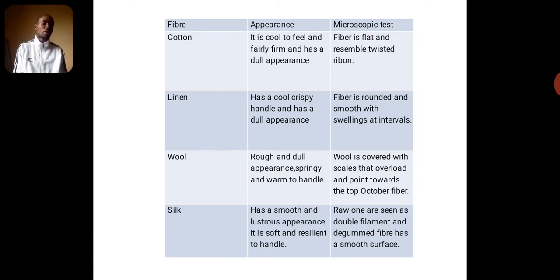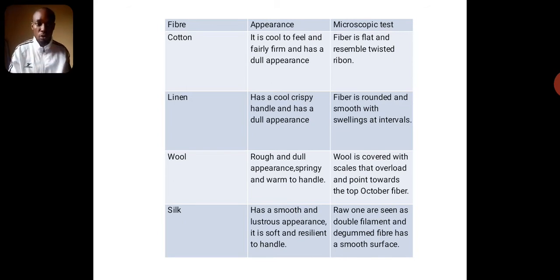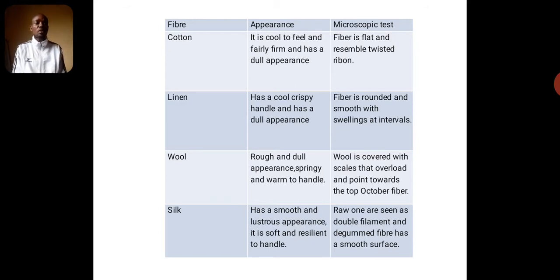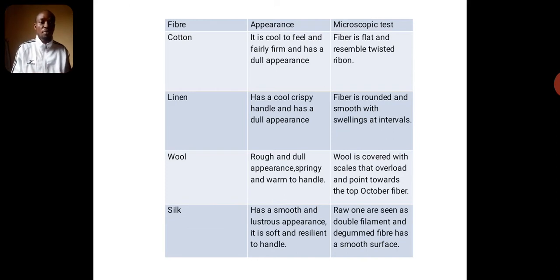Wool in appearance is rough and dull, though springy and warm to touch. That means wool is elastic and warm — it can stretch and come back to its normal shape. When viewed under the microscope, wool is covered with scales, like the scales of fish, with overlapping scales pointing toward the top of the fiber.